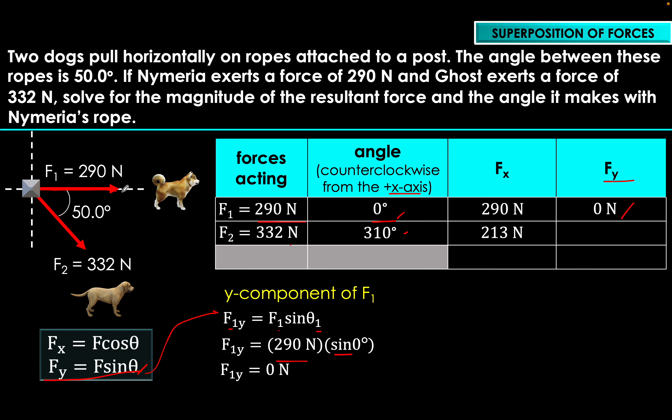To compute this on a calculator: enter negative 254 ÷ 503, press equal, then press shift (or second function), then press tan. You should get 26.8 degrees for theta.